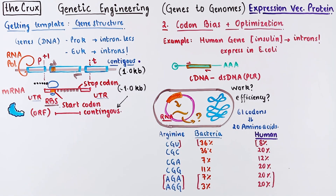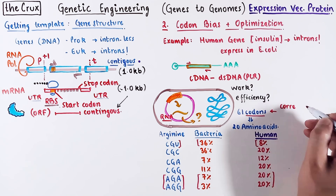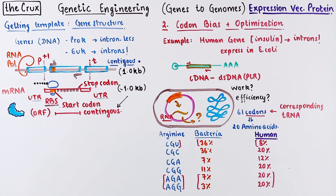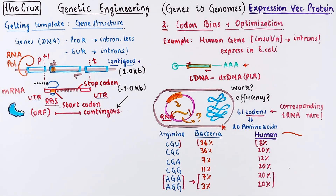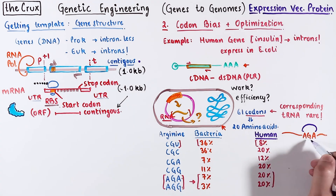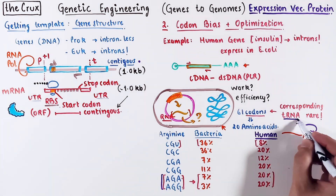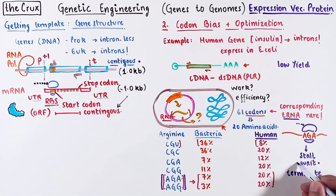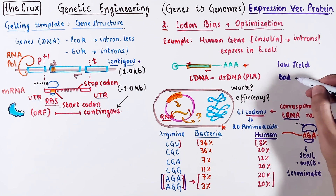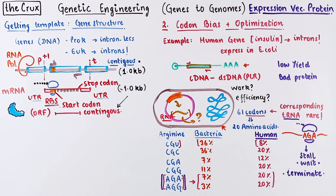Why does this matter for protein expression? When we talk about codon usage or bias, we refer to the corresponding tRNA availability. For AGA and AGG in bacteria, it means the corresponding tRNA is rarely expressed. Our goal is to take the human ORF and express it in bacteria. Suppose the insulin ORF has an AGA codon — what happens if the ribosome meets it? Since AGA is rarely used in bacteria because its corresponding tRNA is not expressed at high levels, the ribosome will have to wait and get paused or stalled. If the AGA tRNA doesn't show up on time, the ribosome might abruptly terminate translation. So you will likely have low yield because the ribosome is slow, and if it terminates abruptly, you get a truncated protein, which is bad.